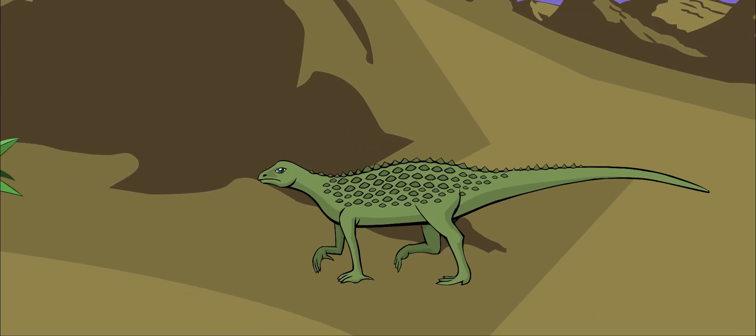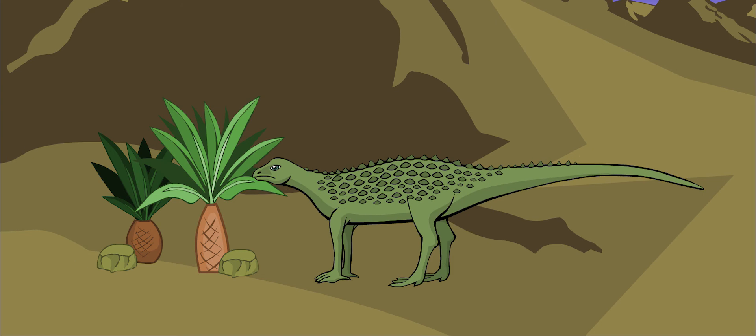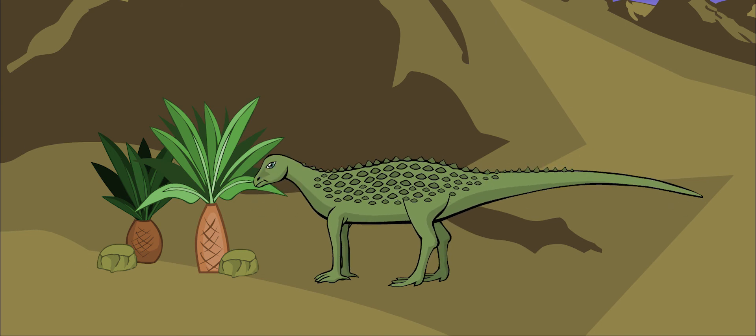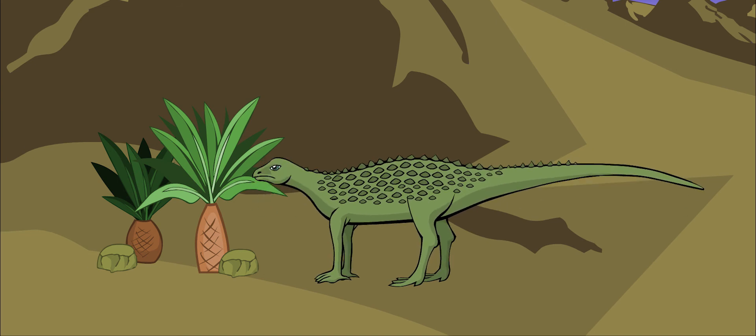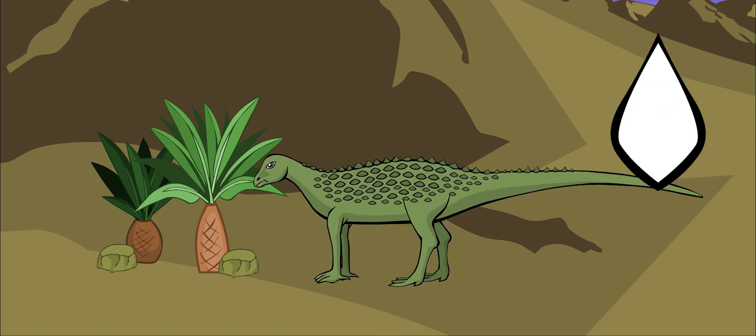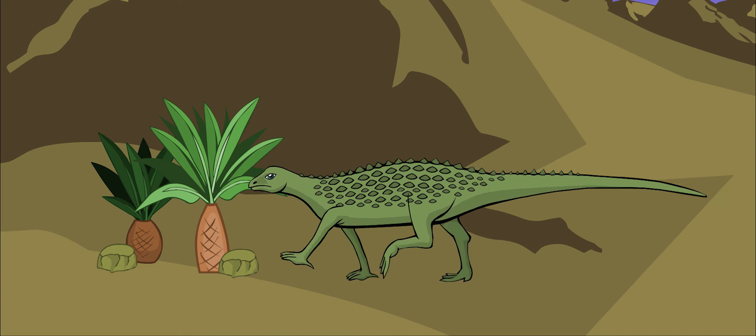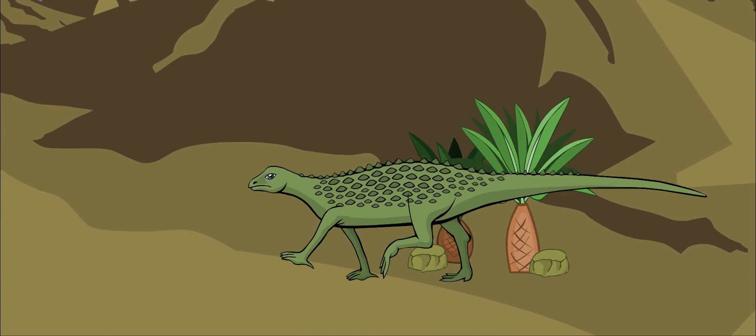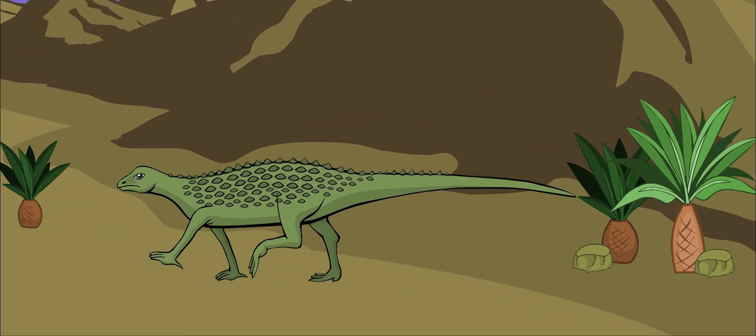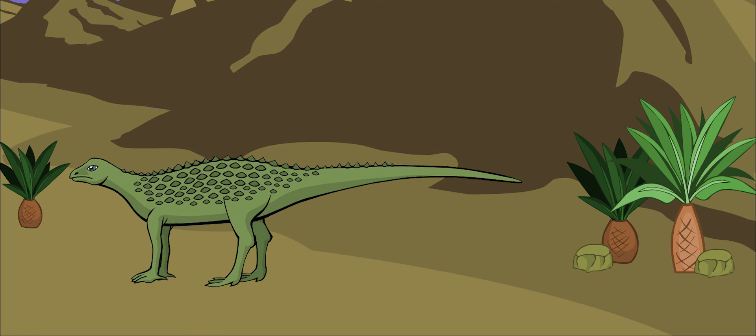Scutalosaurus liked to live in hot, dry places. It was an herbivore, meaning that it only ate plants. It had leaf-shaped teeth to snip off leaves, but probably didn't chew its food before swallowing. This is because it didn't have any cheeks to store its food, so it might have swallowed its food whole.